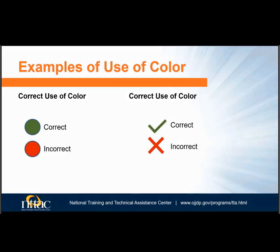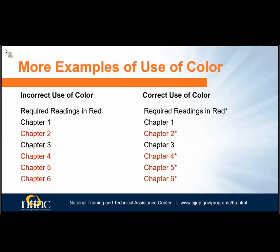Here are some examples of how color might be used to convey information in a Word file. The correct answer should not be indicated by color alone, as in the case on the left of the slide — both correct and incorrect are identified by circles, the only difference being the colors that fill the circles. In the example on the right, symbols are used: a green checkmark. In the example on the left, required readings are only identified by the color red, whereas on the right, an asterisk has been added to identify required chapters.